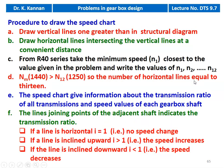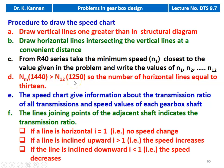We have to draw the speed chart or the ray diagram. For drawing the speed chart, draw vertical lines — one more than in the structural diagram, so here 5 vertical lines. Draw horizontal lines intersecting the vertical lines at convenient distance. From the R40 series, take the minimum speed N1 closest to the value given in the problem. All speeds are written N1 to N12. The motor speed is 1440 RPM, which is greater than 1250, so we have to increase the number of horizontal lines by 1 to accommodate the motor speed within the speed chart. The speed chart gives information about the transmission ratio of all transmissions and all speed values of each gearbox shaft.